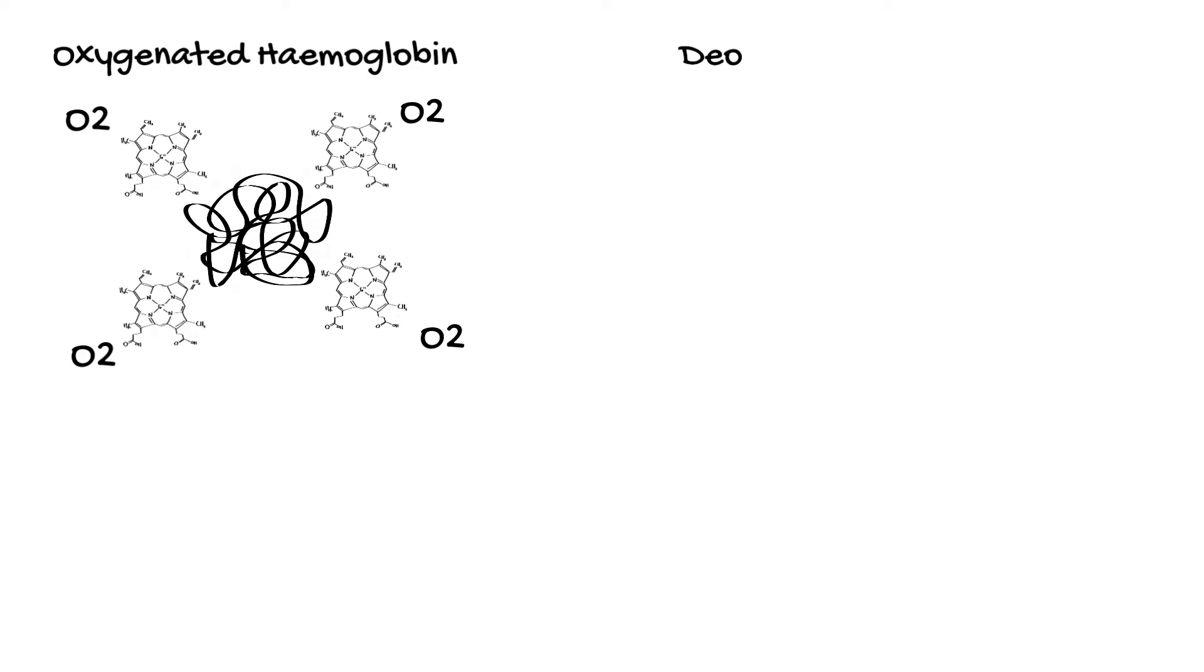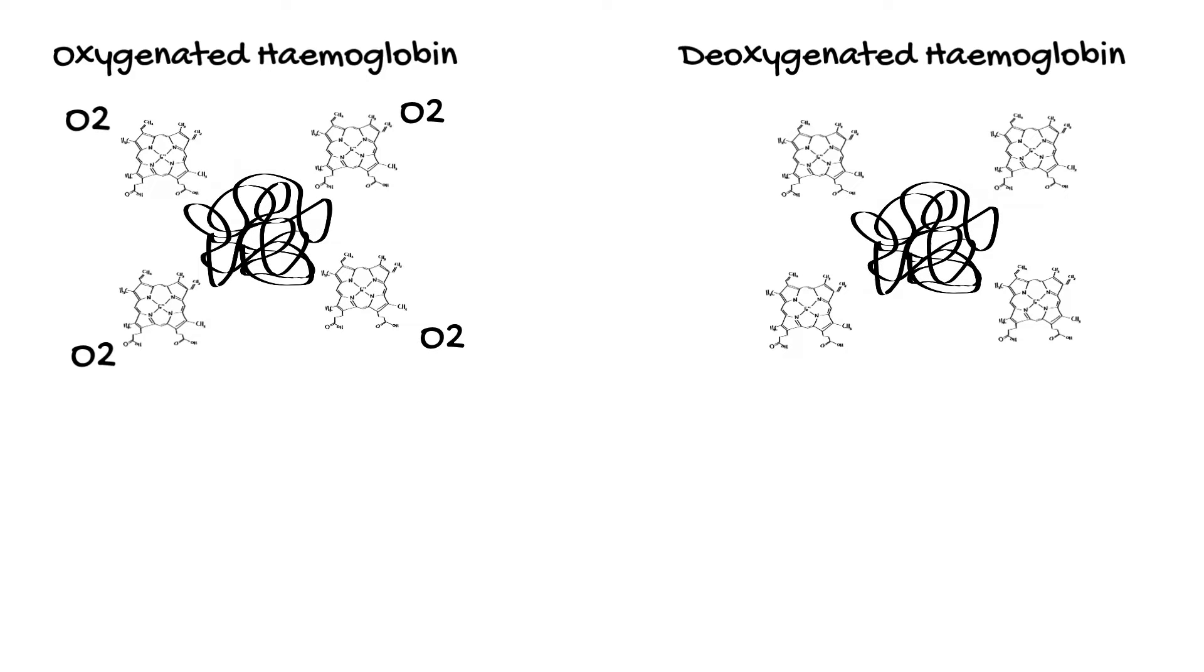We can see this visually because oxygenated hemoglobin is a bright red color and deoxygenated hemoglobin is a deep dark red.